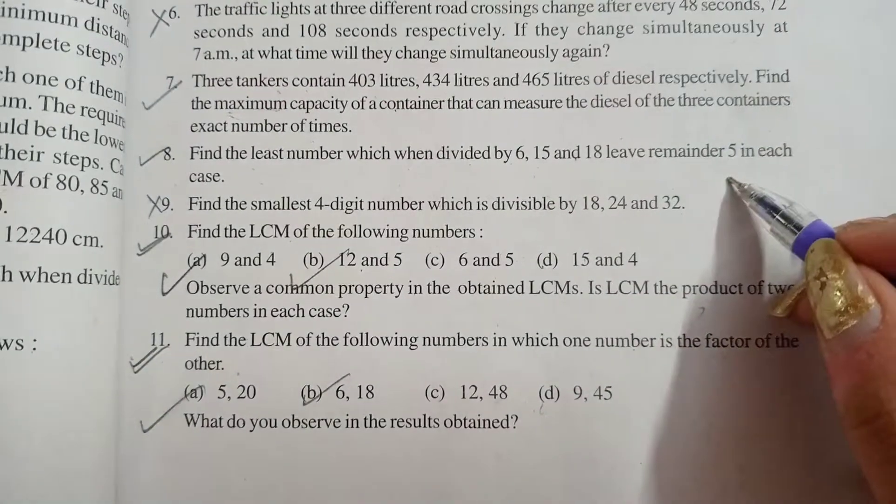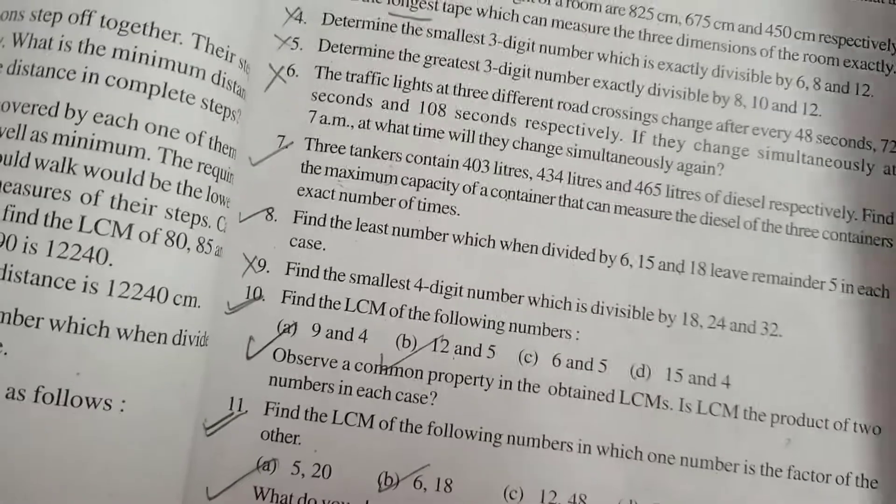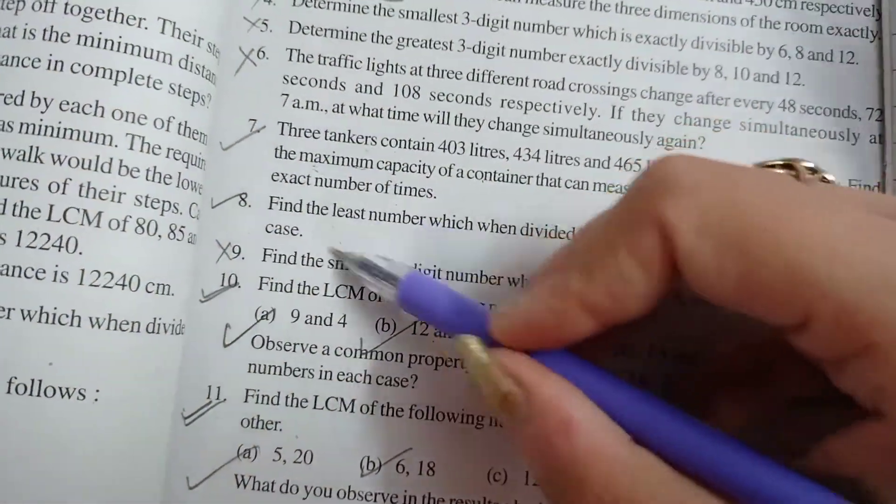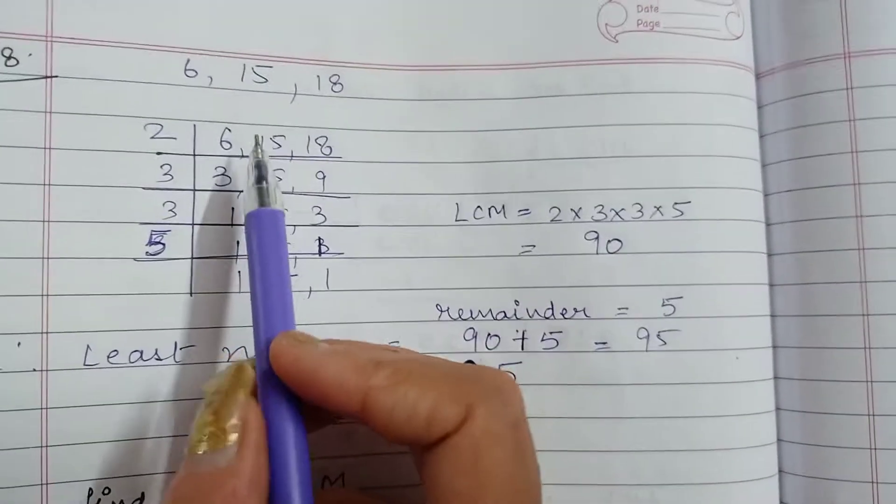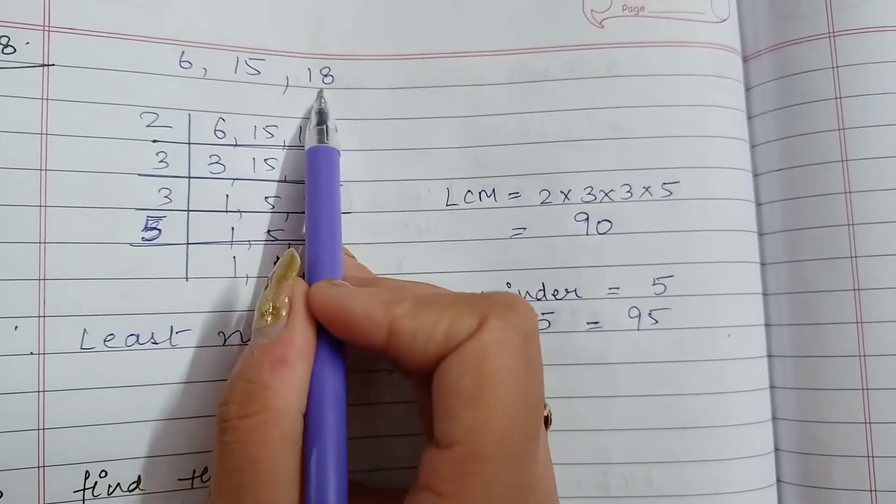Every time the remainder 5 should be left. In that case what will we do? As the word 'least' is there it is clearly stating we need to find the LCM. So we are finding the LCM of 6, 15 and 18.